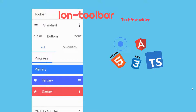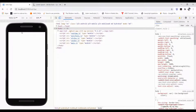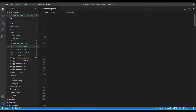Welcome to this tutorial where we will be discussing ion-toolbar — how we can place the header. Basically, iron toolbar is for the header or the footer. You can place iron toolbar and inside it you can have icons, text. Like you can see on the screen the three dots for more options, plus you can have segments and many more things that we will be discussing in this tutorial. Let's open the blank application.